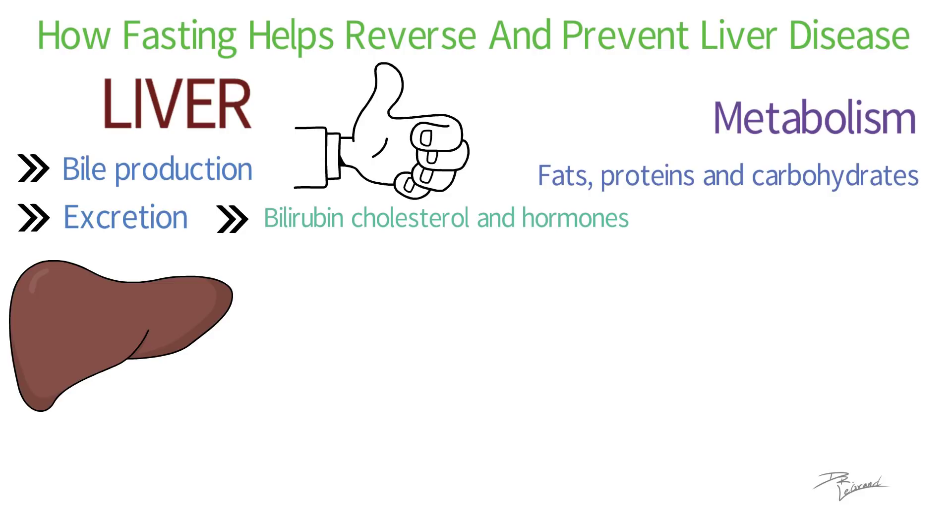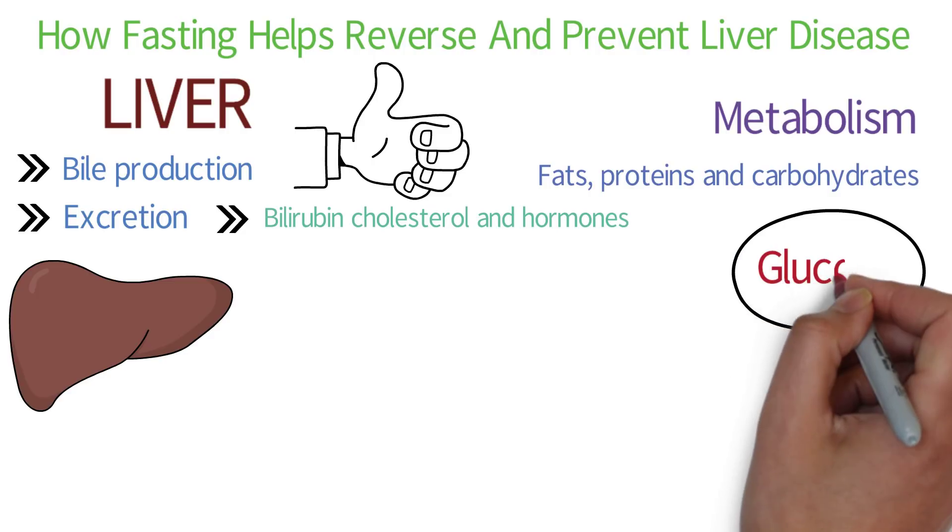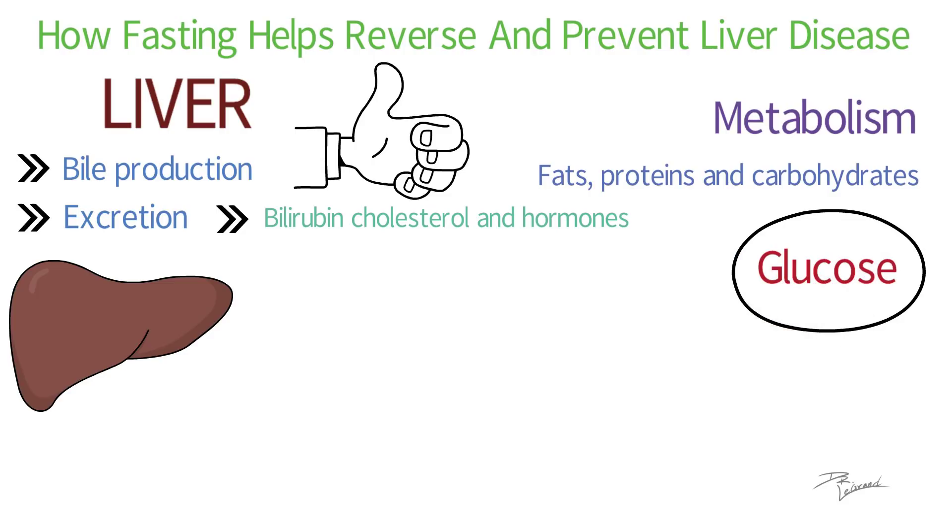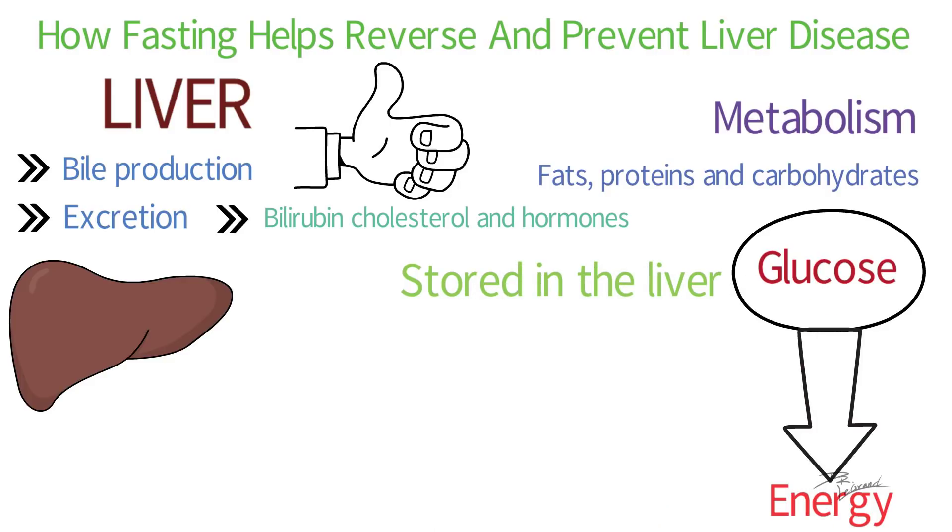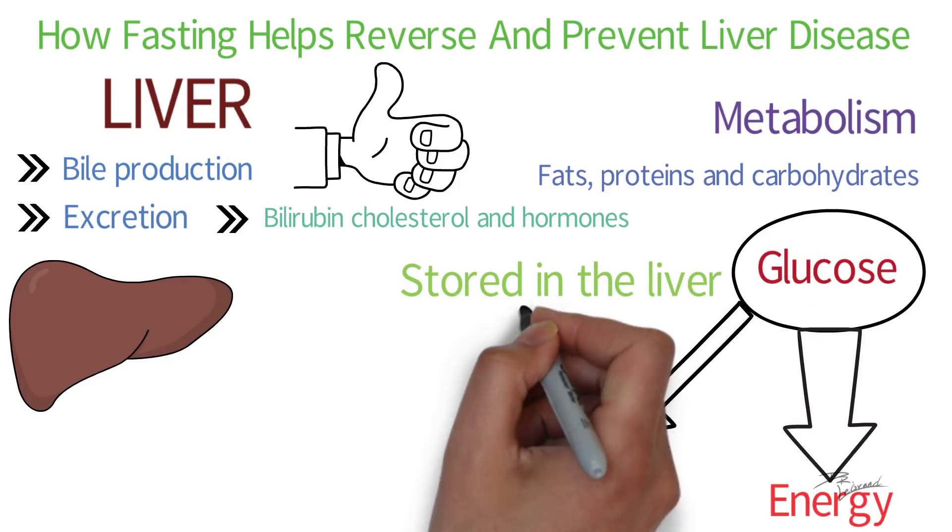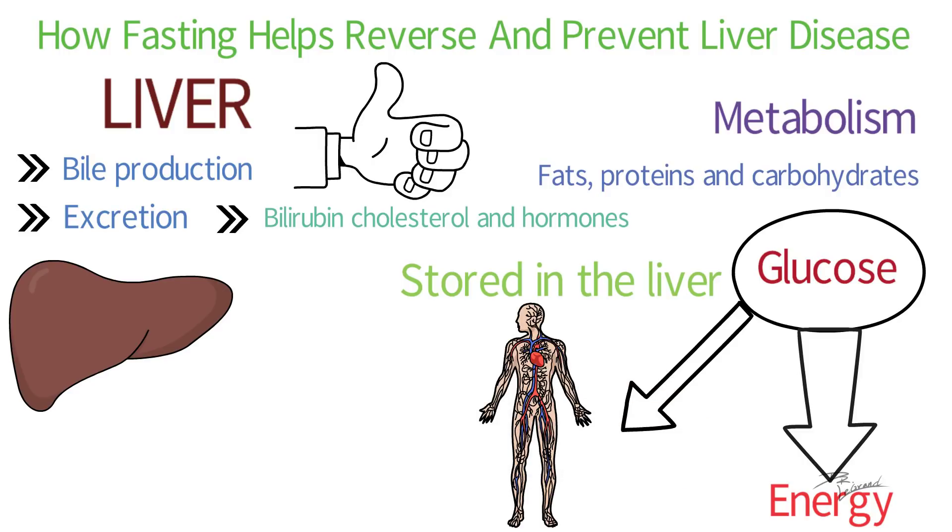It also includes the storage of glucose, the specific type of sugar that the body burns as it requires energy. Glucose reserves are stored in the liver following the consumption of food and then released into the blood circulating system as needed. This is what normally occurs in the human body. When fasting, things do change.